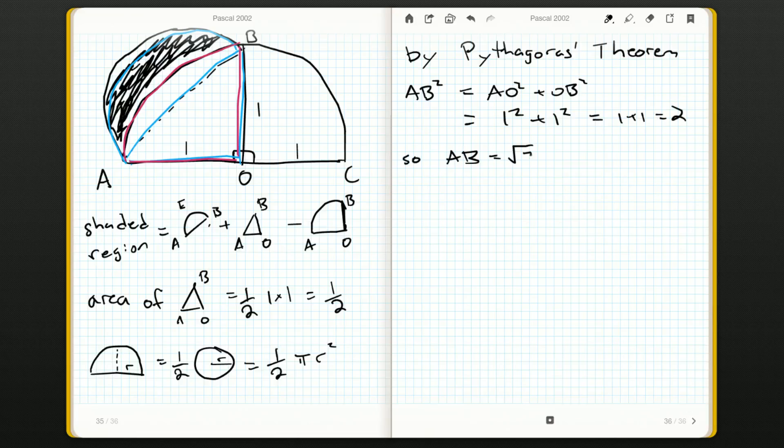So AB is going to be the square root of two. So the radius of semicircle AEB is going to be my diameter divided by two, which is root two over two. Now I can plug it into this formula.